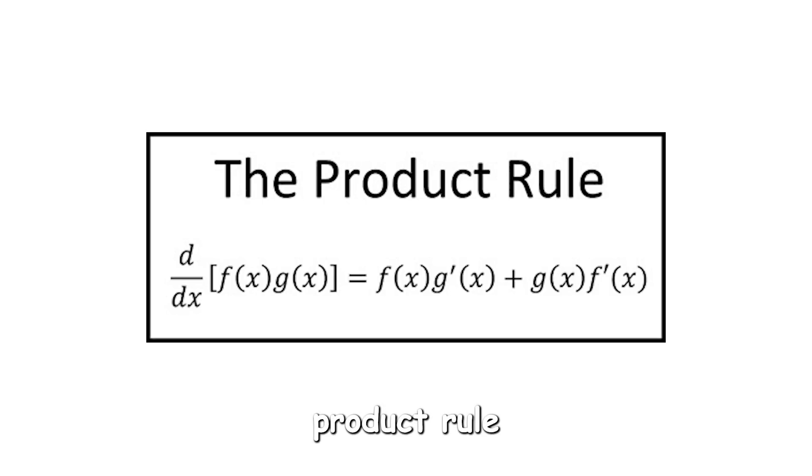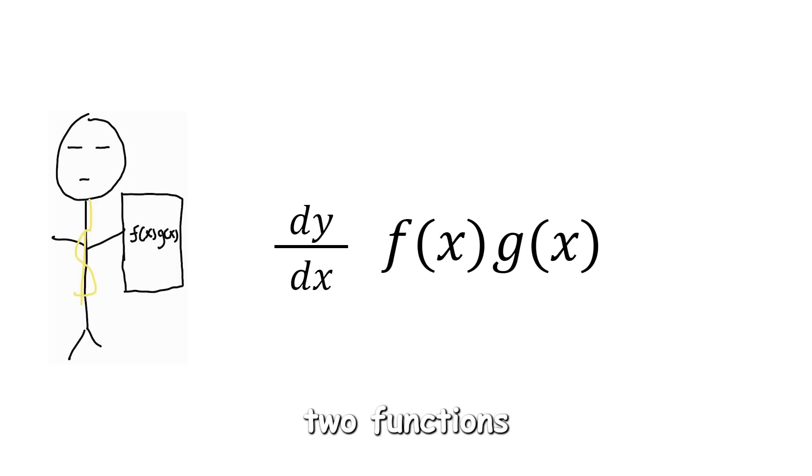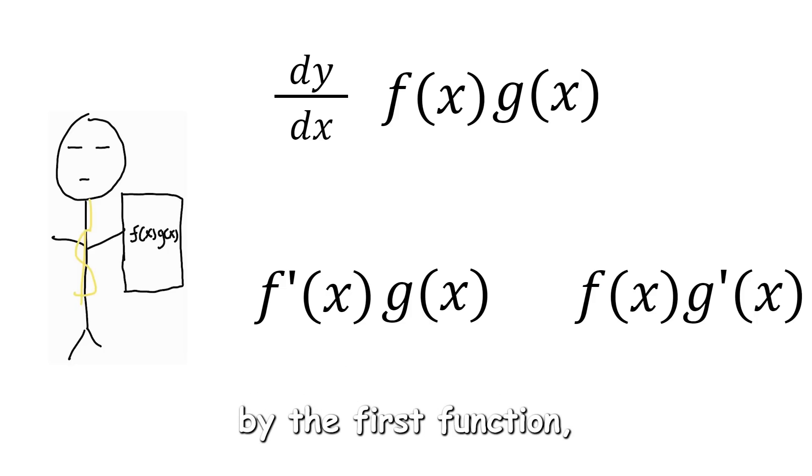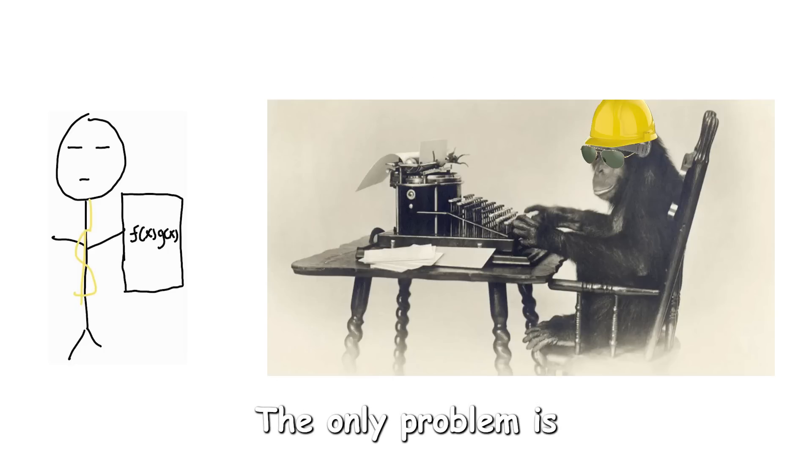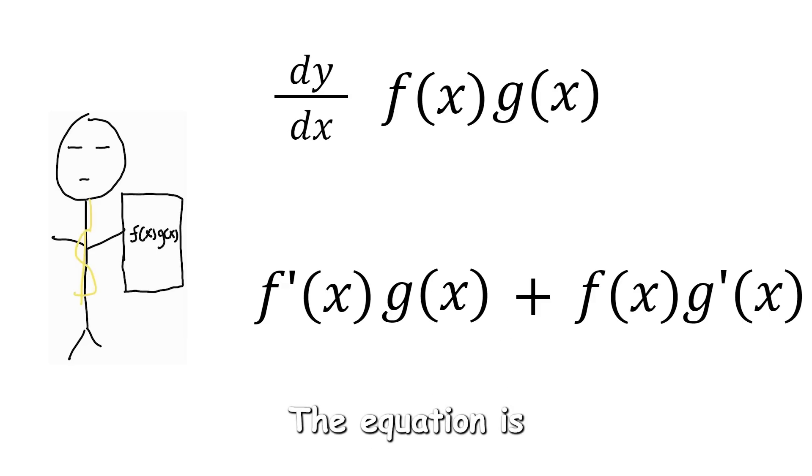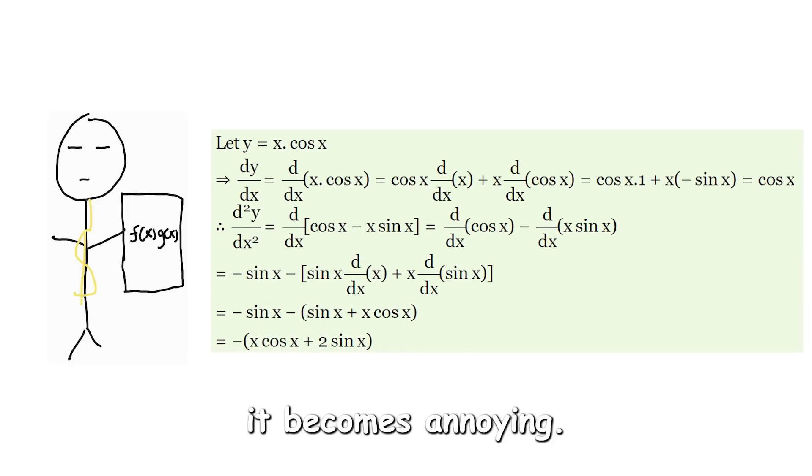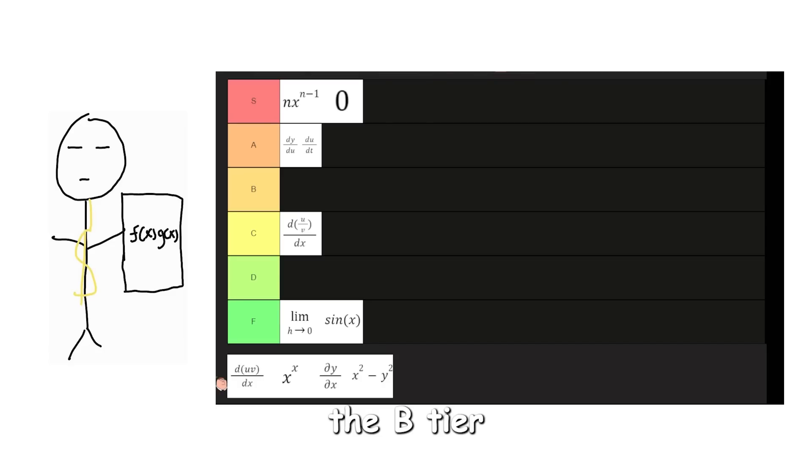Product rule is used when you want to differentiate two functions that are multiplied together. Differentiate the first function, then multiply by the second function. Differentiate the second function, then multiply by the first function, then add them together. The only problem is when I forget I have to use product rule, then just differentiate the functions individually. The equation is easy to remember, but when you are doing higher order derivatives, it becomes annoying, so I will give it the B tier.